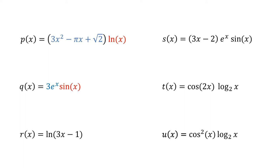Next, let's look at r. You might think that there are two functions here, natural log and 3x minus 1. There are, but they're not being multiplied. Instead, 3x minus 1 is being used as the input to the natural log function. The product rule only gets used when you're multiplying two functions, so it doesn't apply here.